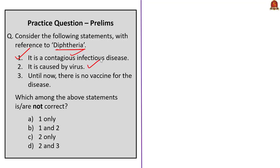The second statement: diphtheria is caused by a virus. This is incorrect — it is caused by a bacterium called Corynebacterium diphtheriae. The third statement: until now there is no vaccine for the disease. This is also wrong because diphtheria is a vaccine-preventable disease. Both statements two and three are incorrect, so the answer is option D: two and three only.